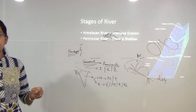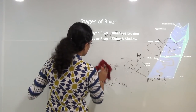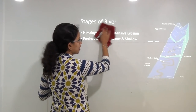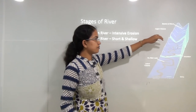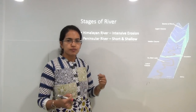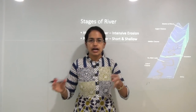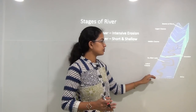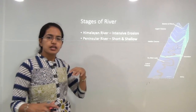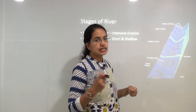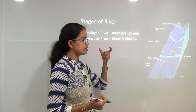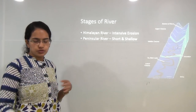A river behaves similarly to a human being — it has phases of youth, middle age, and old age. During the young phase, similar to a hyperactive child, the river is intense and erodes a lot of material. During the middle course it gets calmer, and during the lower course the river slows down, deltas form, and the river merges into the ocean. Himalayan rivers are known for intensive erosion as they originate from glacier regions, while peninsular rivers are seasonal, short, and shallow.